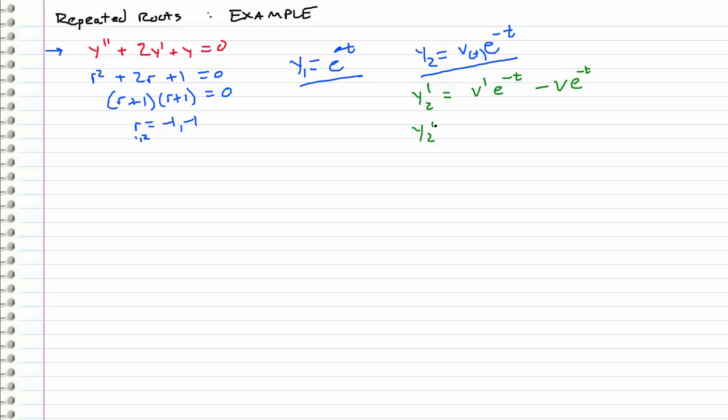Let's go ahead and differentiate that again to get y2 double prime. So we get v double prime e to the negative t. And then we've got to do the product rule again. So minus v prime e to the negative t. And now let's work with this guy over here. So we get minus v prime e to the negative t. And then a plus v e to the negative t.